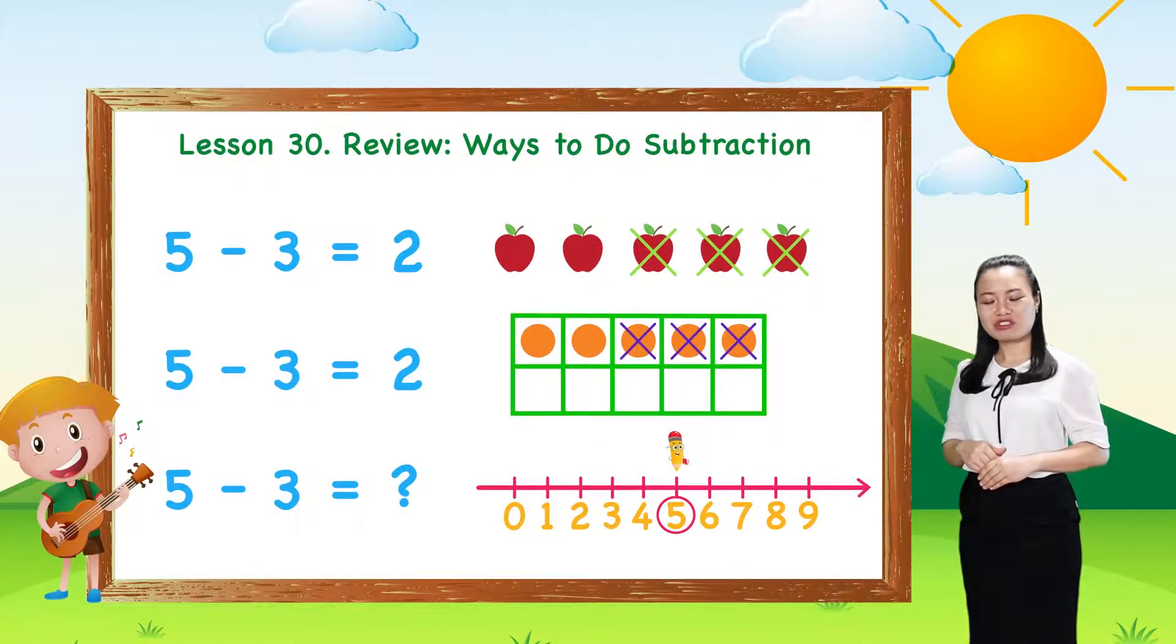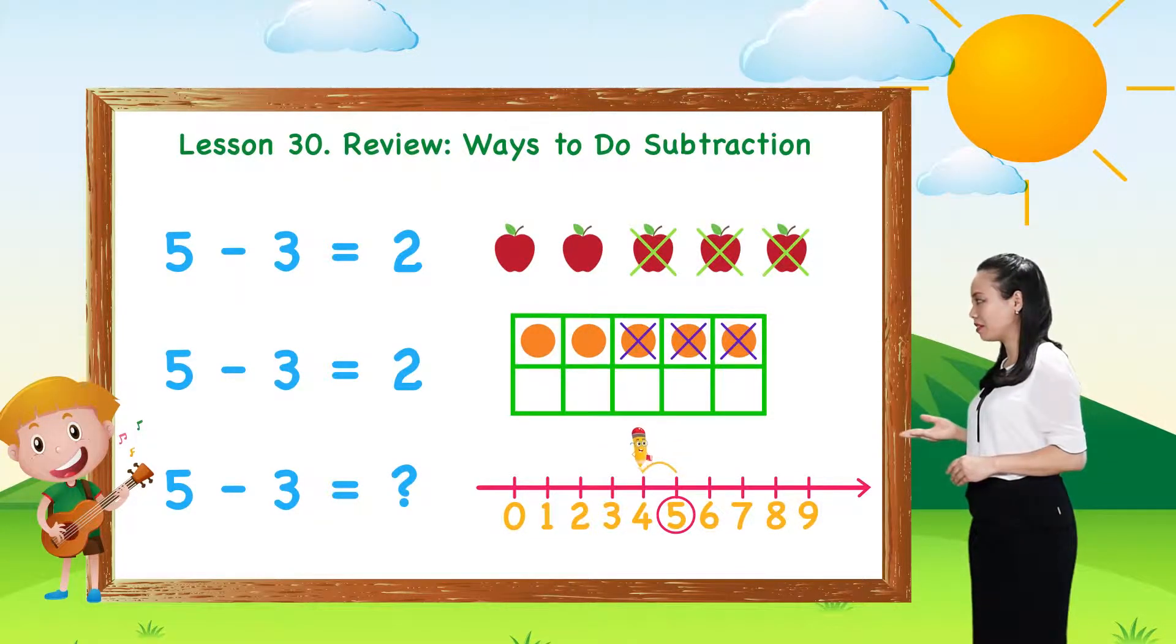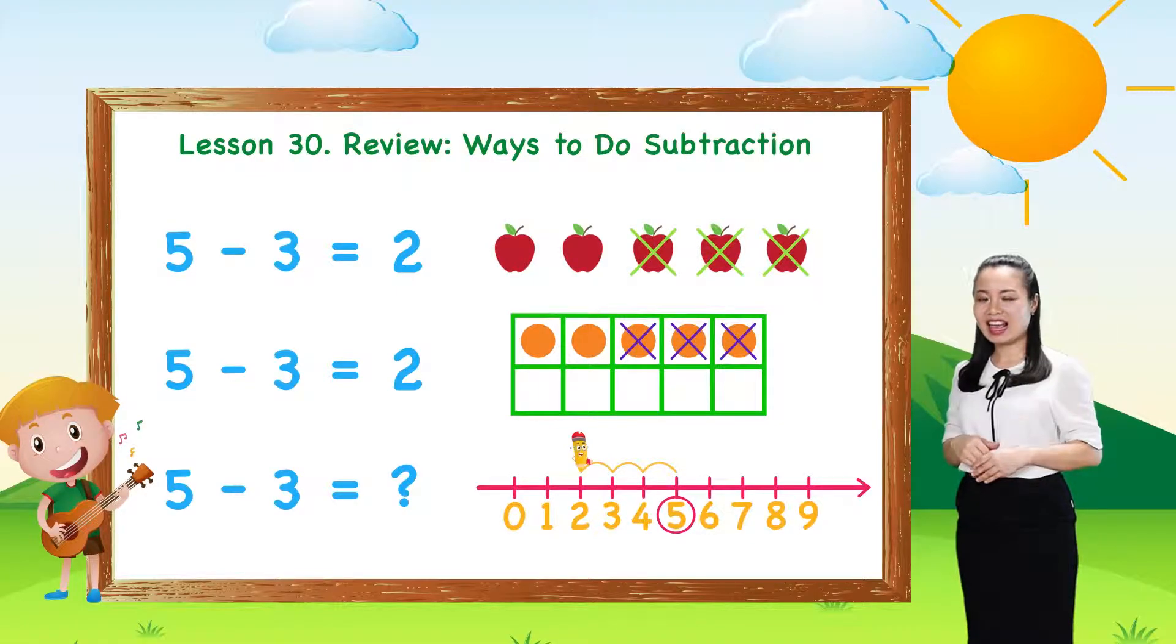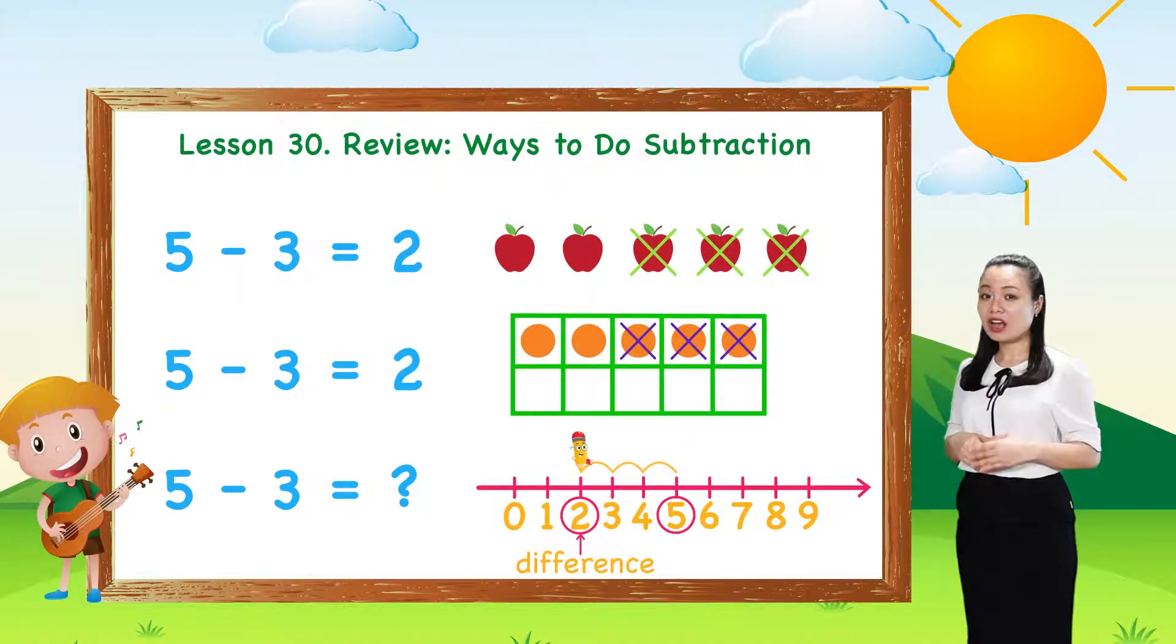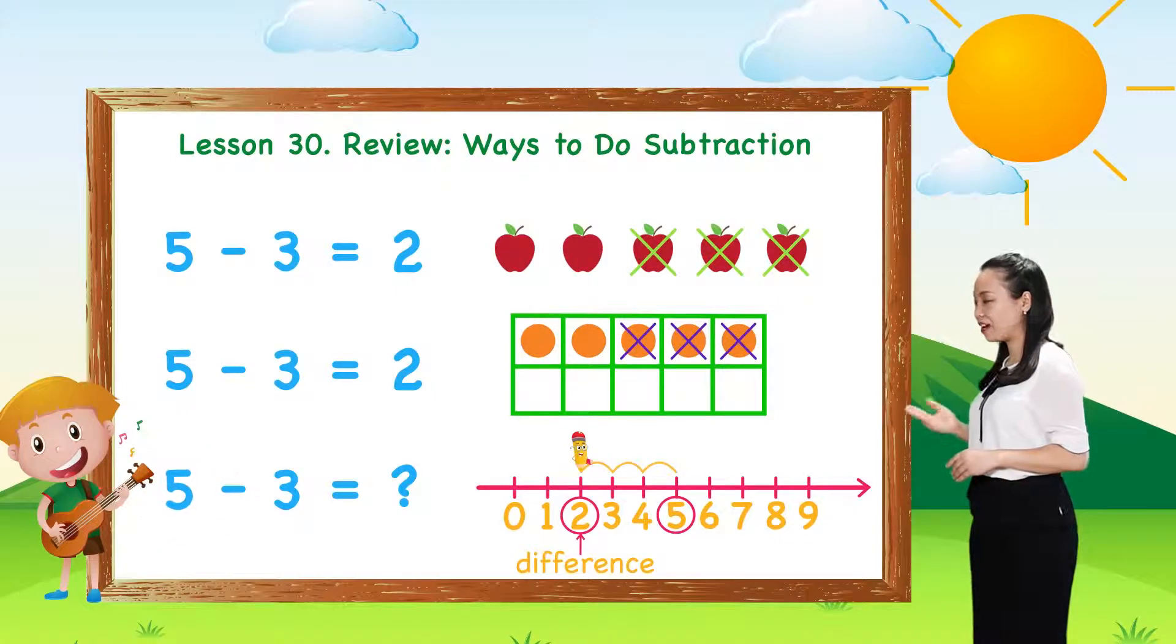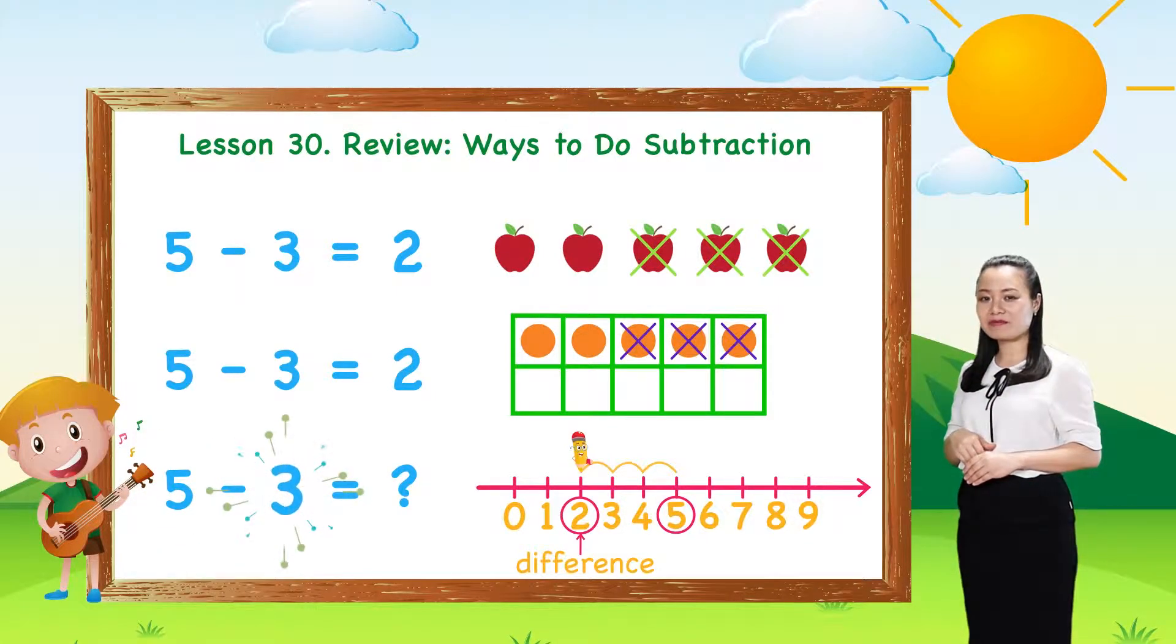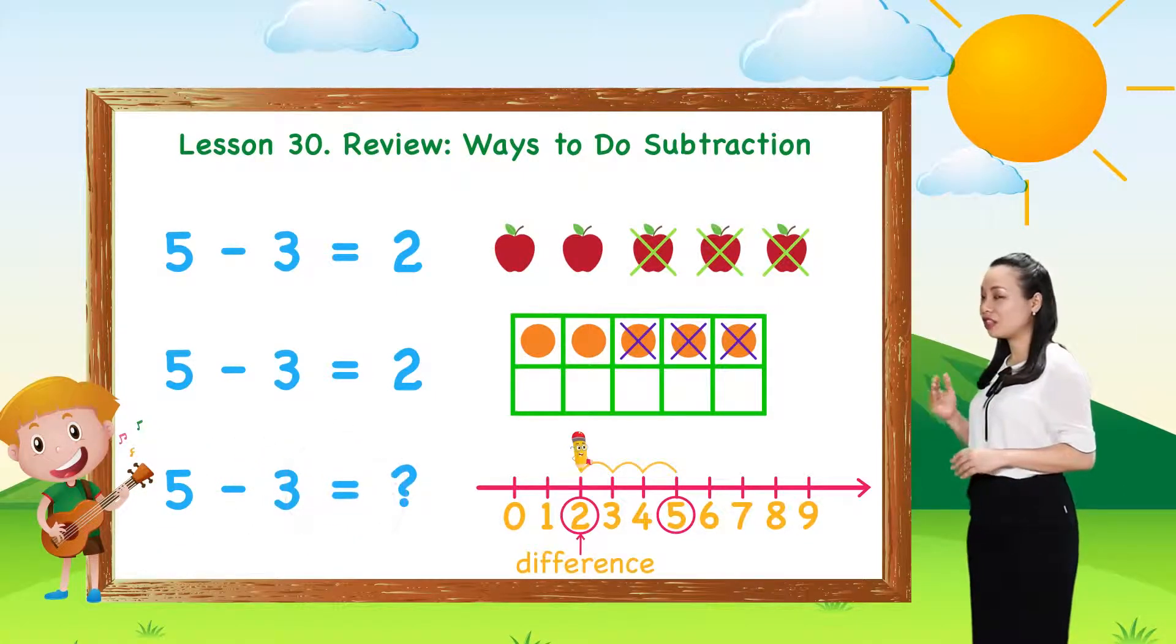Then, jump 3 numbers to the left. Then, see the number where we stop. This number is the difference. Here we stop at number 2. Therefore, 5 minus 3 equals 2.